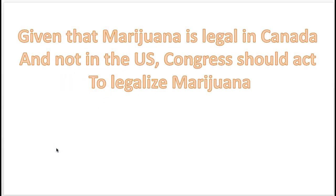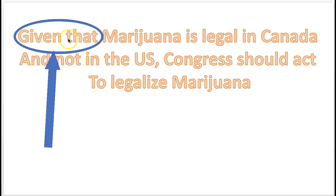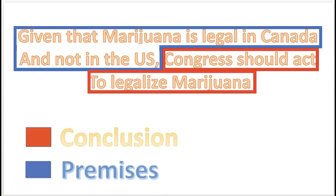Practice argument number two: 'Given that marijuana is legal in Canada and not in the US, Congress should act to legalize marijuana.' Identify the premise indicator — the answer is 'given that.' Given that is the premise indicator. The premise is in the blue squares and the conclusion is in the red square.